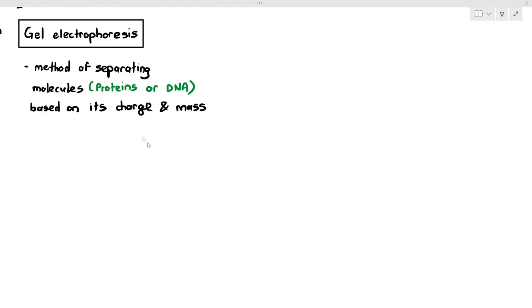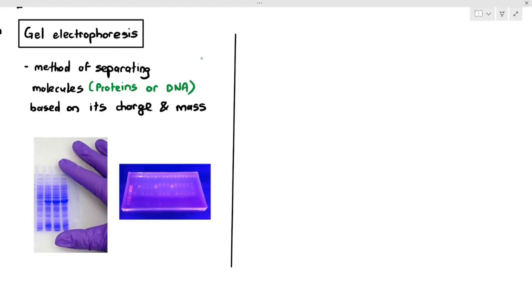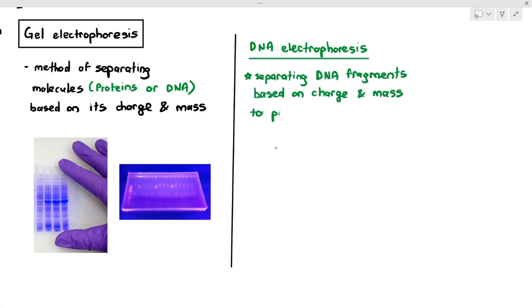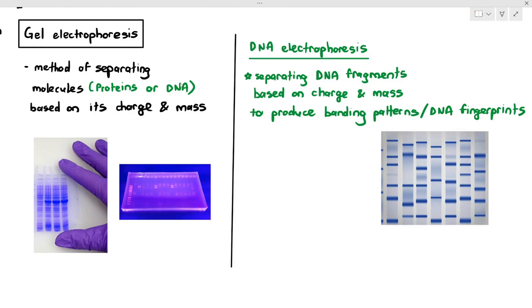The pictures that I'm including here are from DNA electrophoresis. When you separate the DNA molecules according to their charge and mass, they will produce those patterns, and those patterns are referred to as DNA fingerprints. The focus on this chapter is going to be on DNA electrophoresis only. These are examples of the bending patterns.